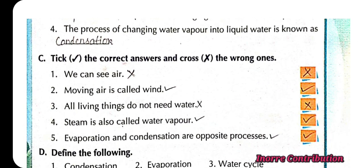C, tick the correct answer and cross the wrong ones. First, we can see air, cross. Second, moving air is called wind, true, correct.